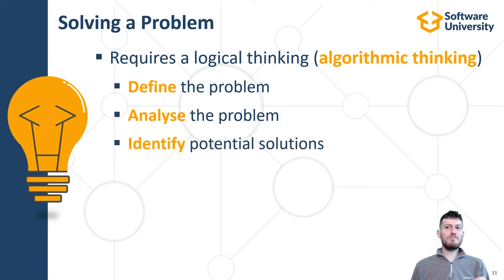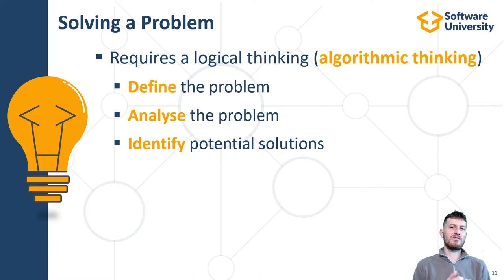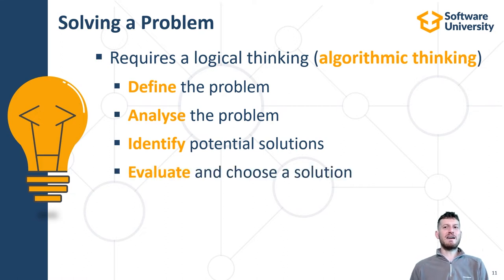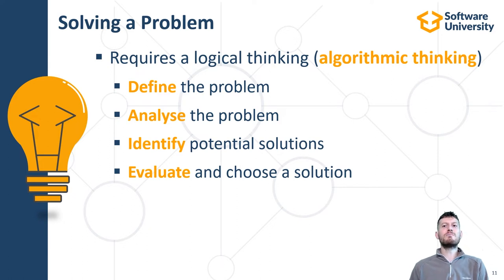The next stage is to identify potential solutions. We generate and explore different ideas, analyze their correctness, strengths and weaknesses, practical applicability and costs of implementation. Once we identify and analyze enough potential solutions, we evaluate them and choose a solution. Choosing a solution from several candidates is a decision-making process that depends mainly on the requirements, our capabilities and available resources, and the balance between the strengths and weaknesses of the candidate decisions.